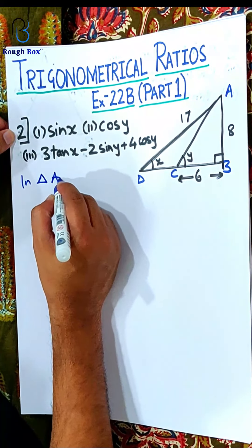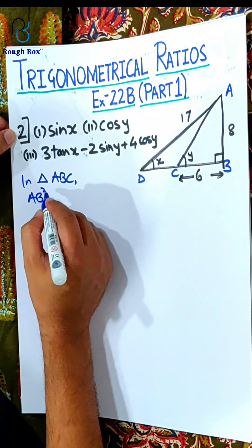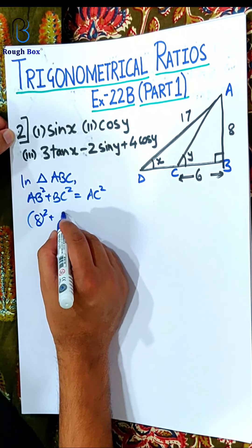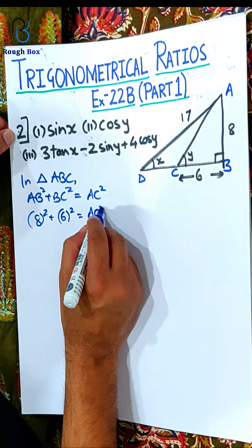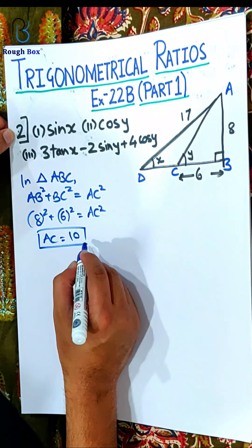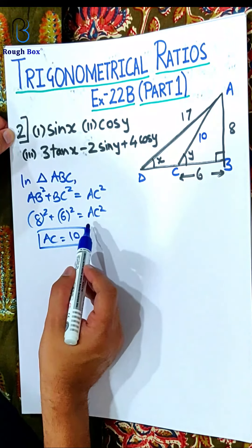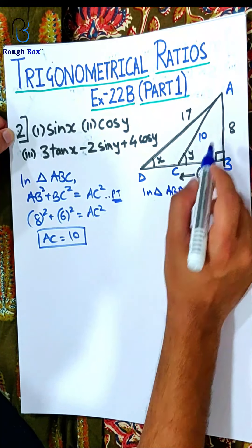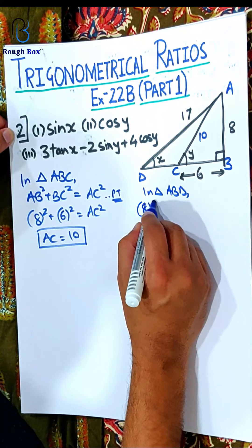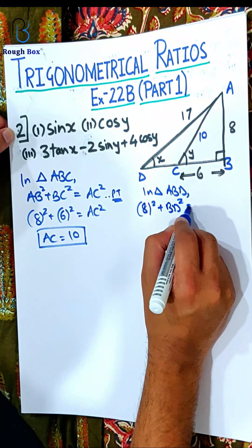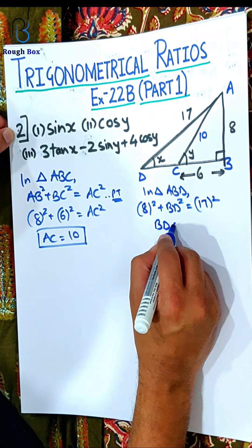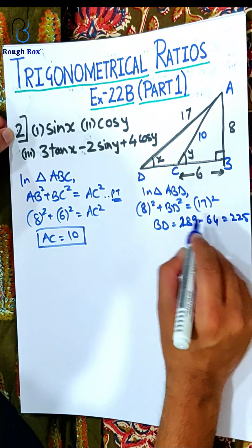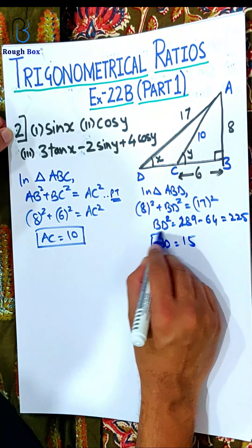So in triangle ABC: AB square plus BC square equals AC square. So AB is 8, BC is 6, and AC is unknown. So obviously AC is going to be 10, since it's a triplet. At least these two steps you write, the rest you might not write. Let's take the other triangle. In triangle ABD: 8 square plus BD square equals 17 square. So BD will be — 17 is 289 minus 64 — that will be 225. So root of 225 gives us 15.